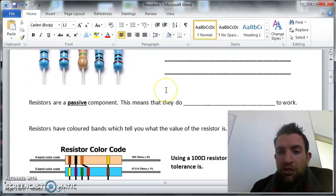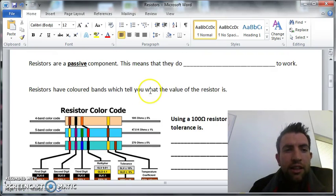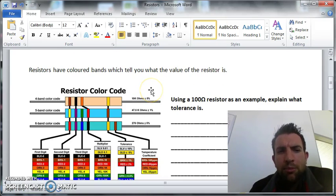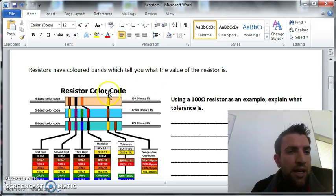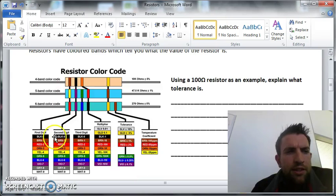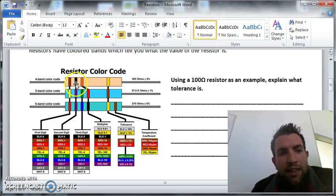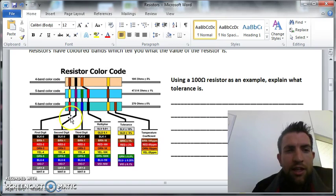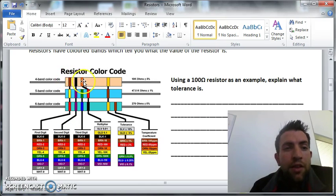Resistors have colored bands that tell you the value. We generally use a four-band color code. The first and second digits give it a number value. For example, this one is brown so we give it a value of one, black is zero.